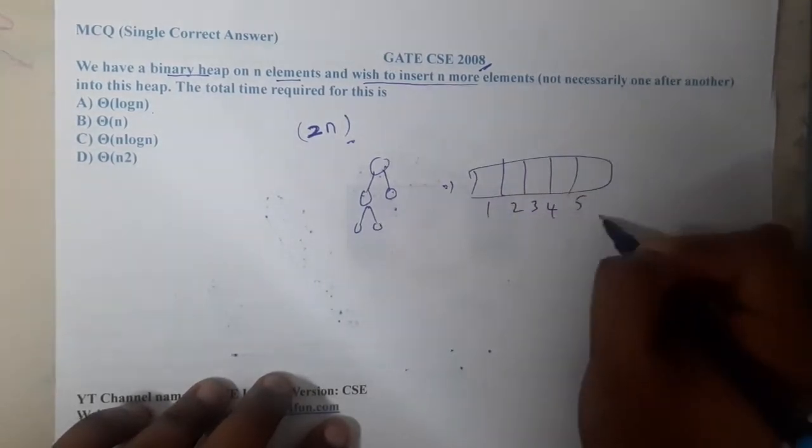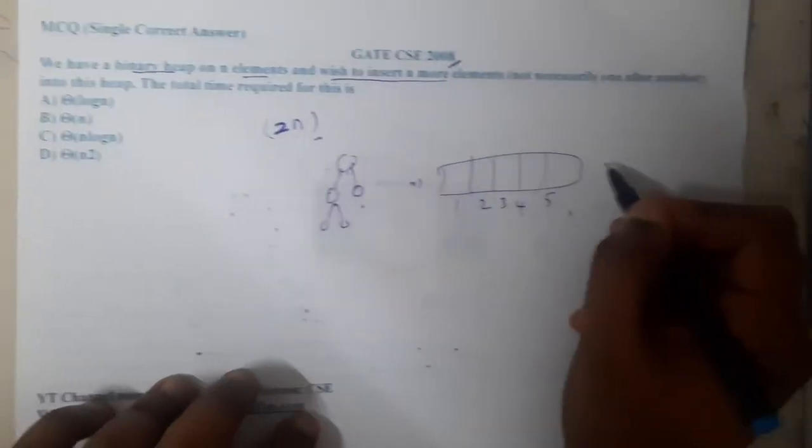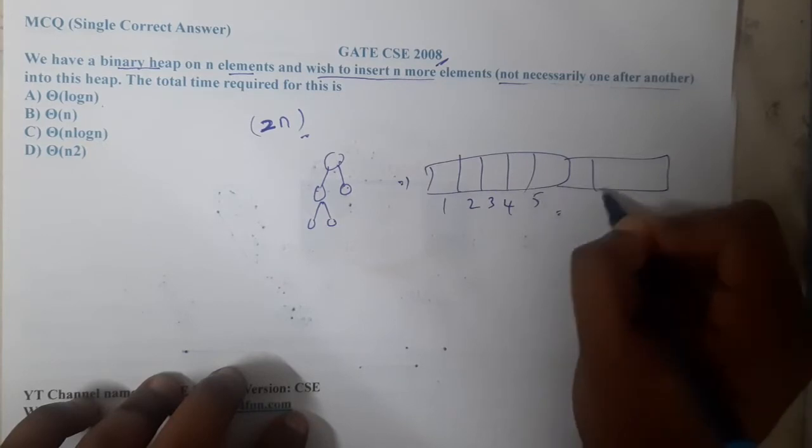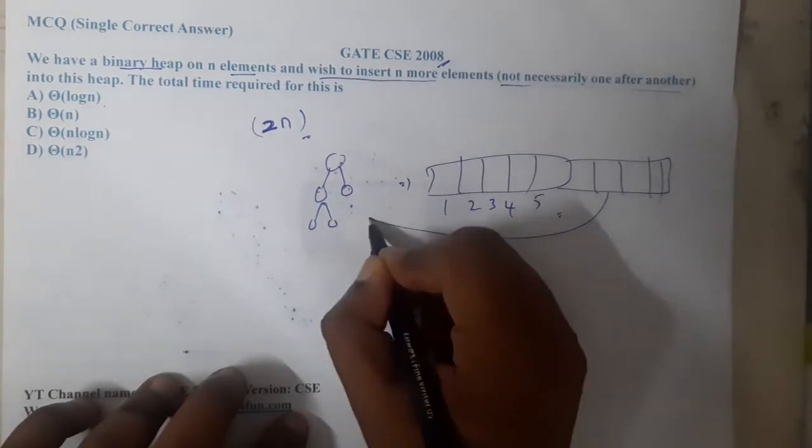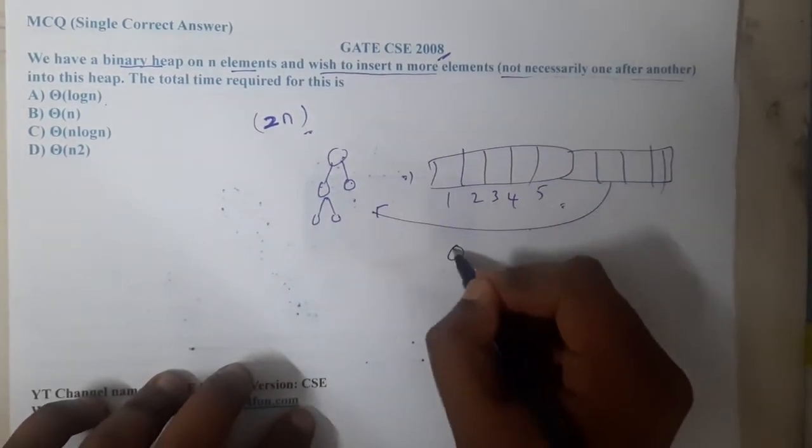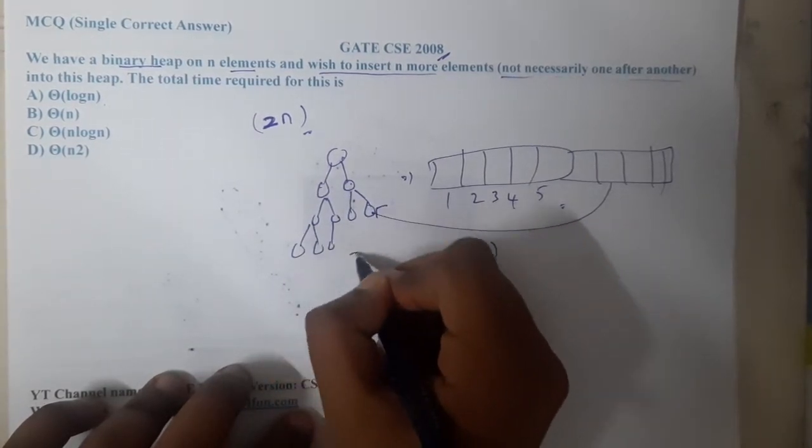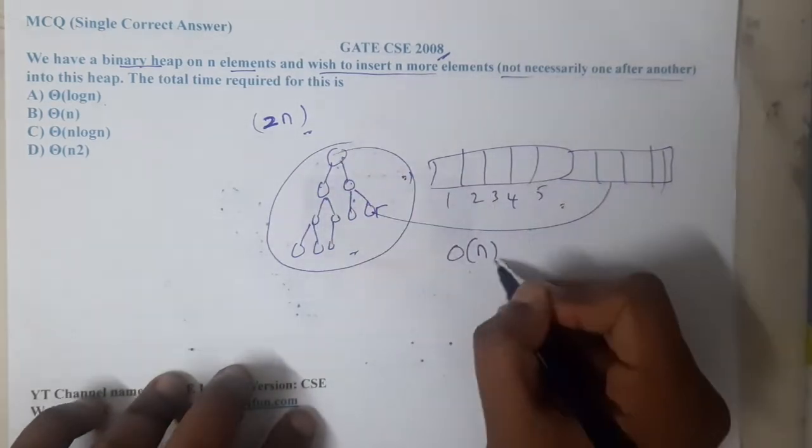If I am adding five more elements, in a single step I can take five more space and just connect it here. So indirectly by calling a build heap which costs O(n), you can construct those five elements - one, two, three, four, and five. So the construction will be done. It will take O(n).